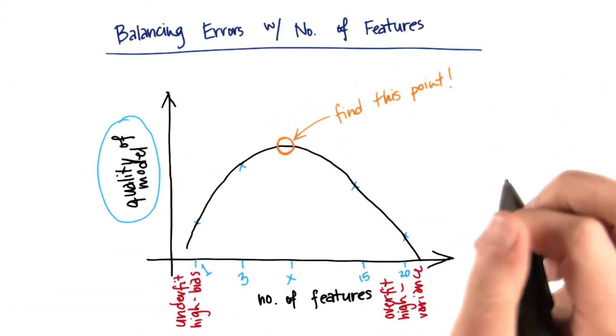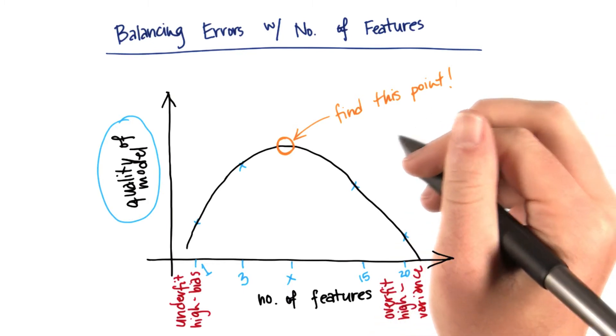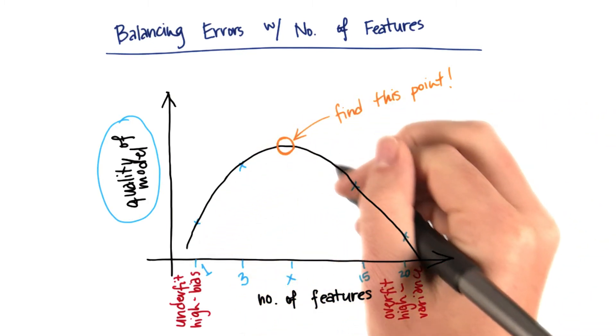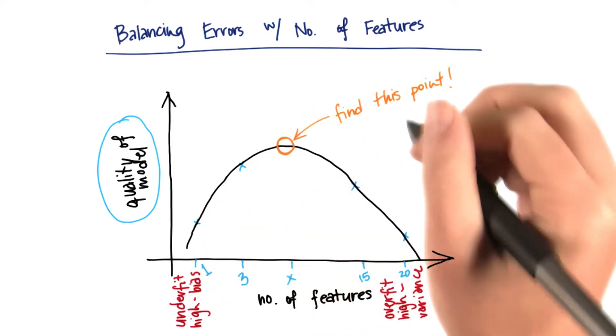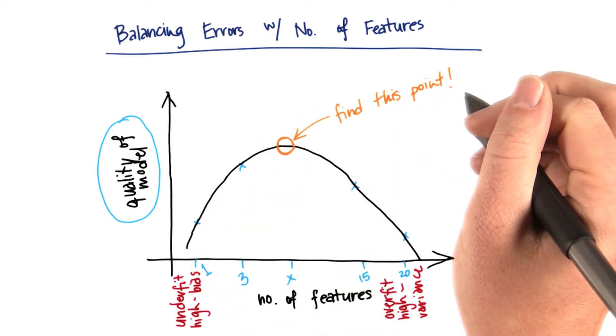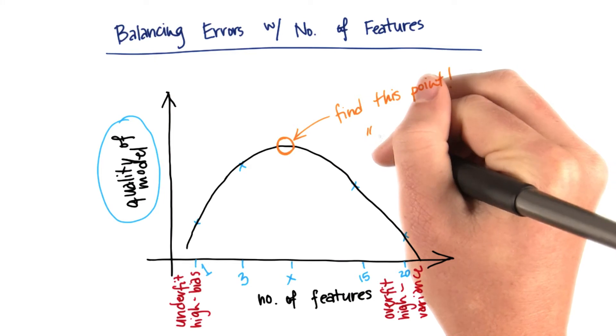So a reasonable thing to think, and what we'll talk about for the next few videos, is how we can mathematically define what this arc might be so that we can find this maximum point of it. And this is a process that's called regularization.